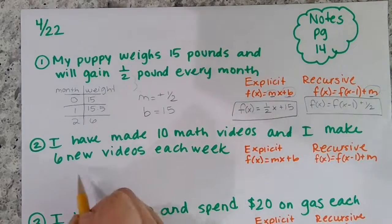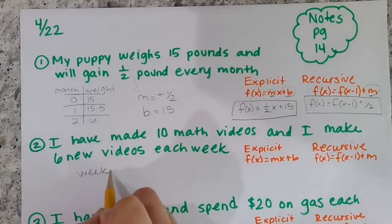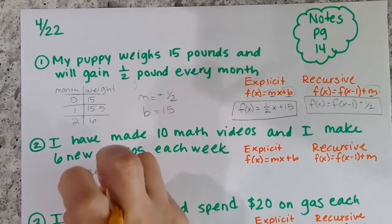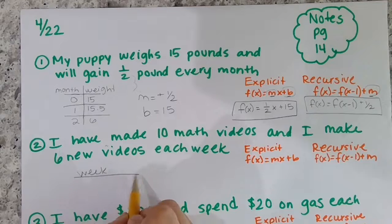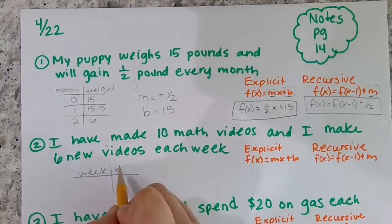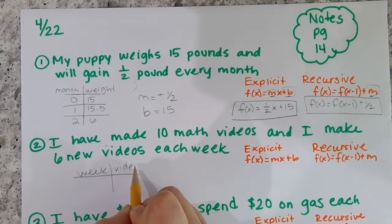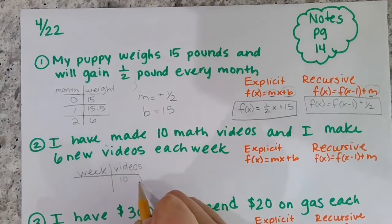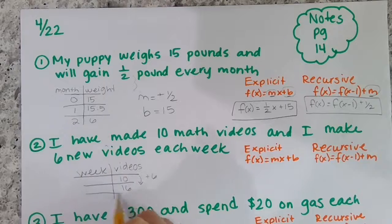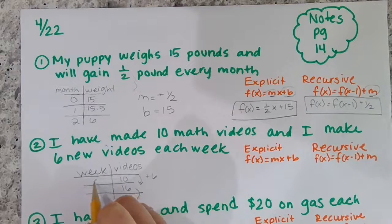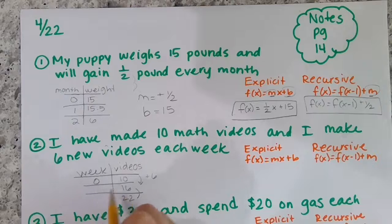Next one says I have made 10 math videos and I make six new videos each week. So I started off with 10 and I'm making six more, so the following week I would have made a total of 16, and then a total of 22. At the beginning I started with 10.